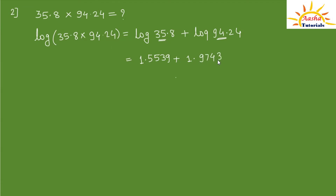Adding the two logs: 9 plus 3 is 12 carry 1; 5 plus 3 is 8; 7 plus 5 is 12 carry 1; 10 plus 5 is 15 carry 1; and we get 3. The result is 3.5282.